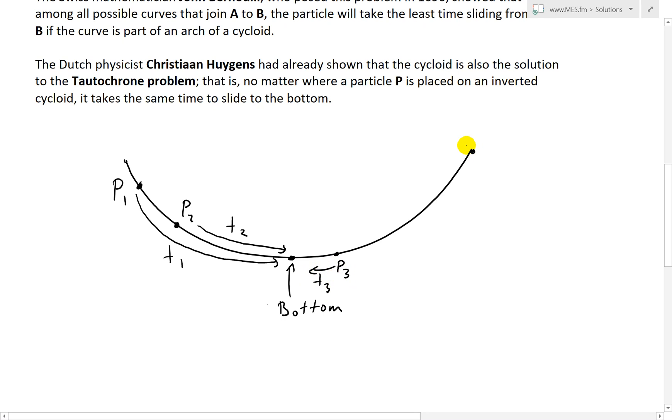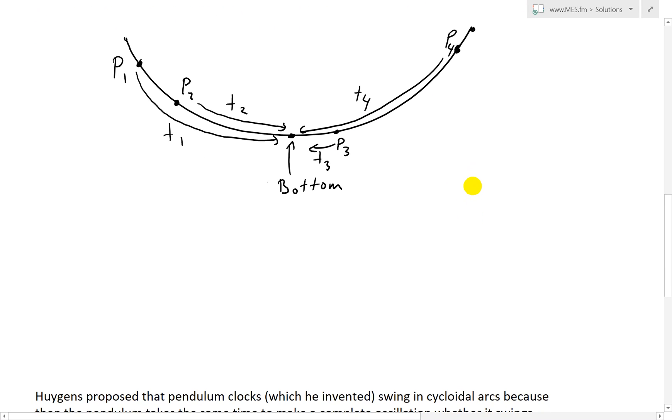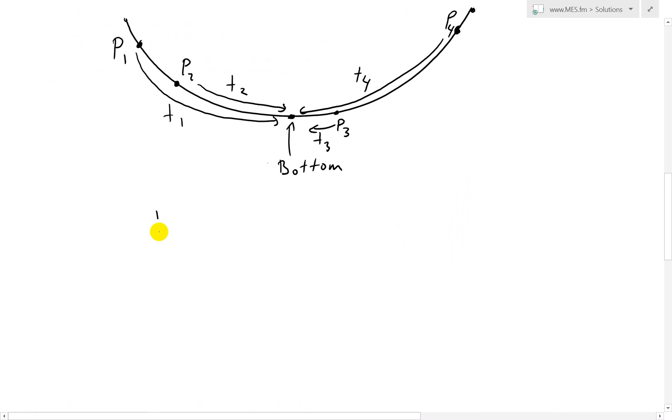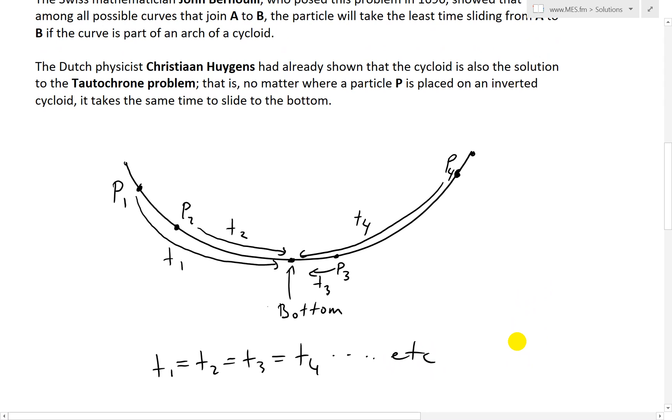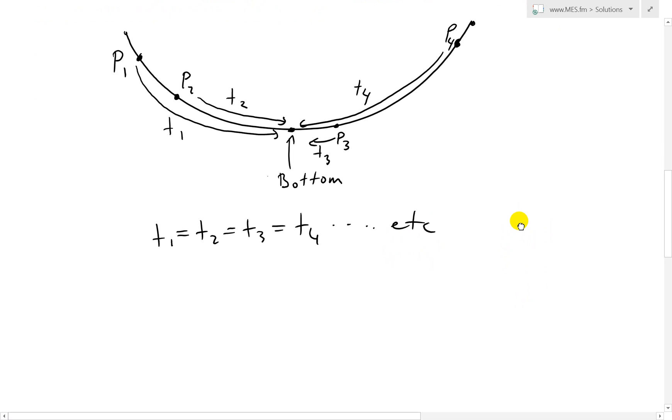And then let's say you had a point all the way across here, let's put it over here. This is P4. And then this would go all the way down here. This is P4. And what it turns out is that, in fact, all the times are the same. So T1 equals T2 equals T3 equals T4. This is quite amazing stuff. So it doesn't matter where you drop it, because of this curve, it will fall at the exact same time to the bottom of it.